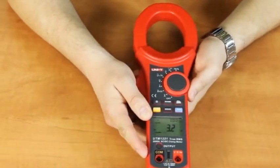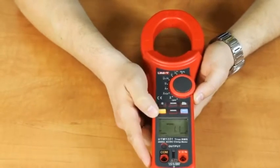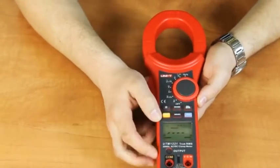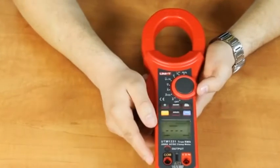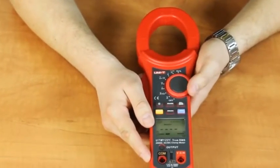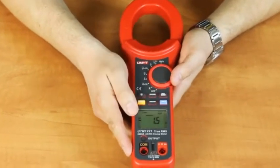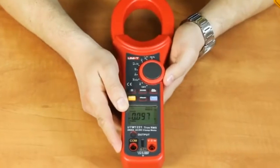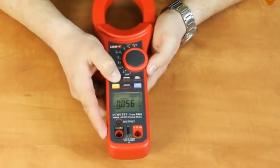There are additional functions. At AC current measurements, you may use a function of inrush starting current measurement. The main display shows the current value and the additional one shows inrush starting current. Maximum minimum function is also available, as well as relative measurements, data hold function, and display backlight.